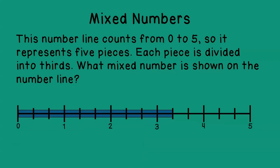Alright, now this number line, if you look, it goes from 0 to 5, so it is equal to 5 pieces. And each of those pieces has been divided into 3 sections or thirds. So looking at the model on the screen, what mixed number is shown by this number line? Well, if you look closely at it, you're going to see that it's 3 and 1/3, because we have 1 whole section, 2 whole sections, 3 whole sections, and then an additional piece that's there. So 3 and 1/3 is what the mixed number is.